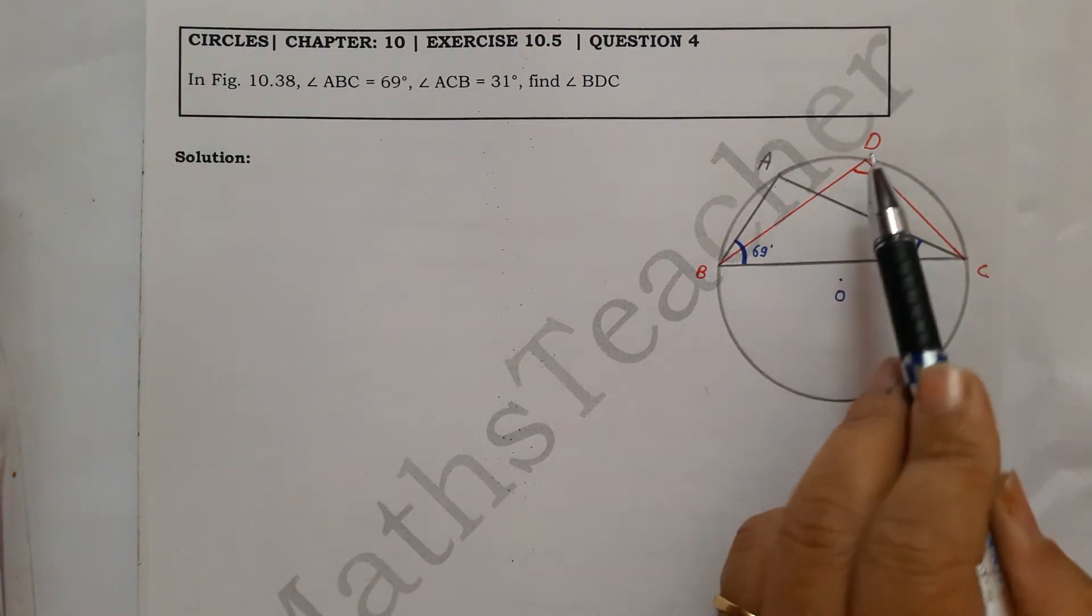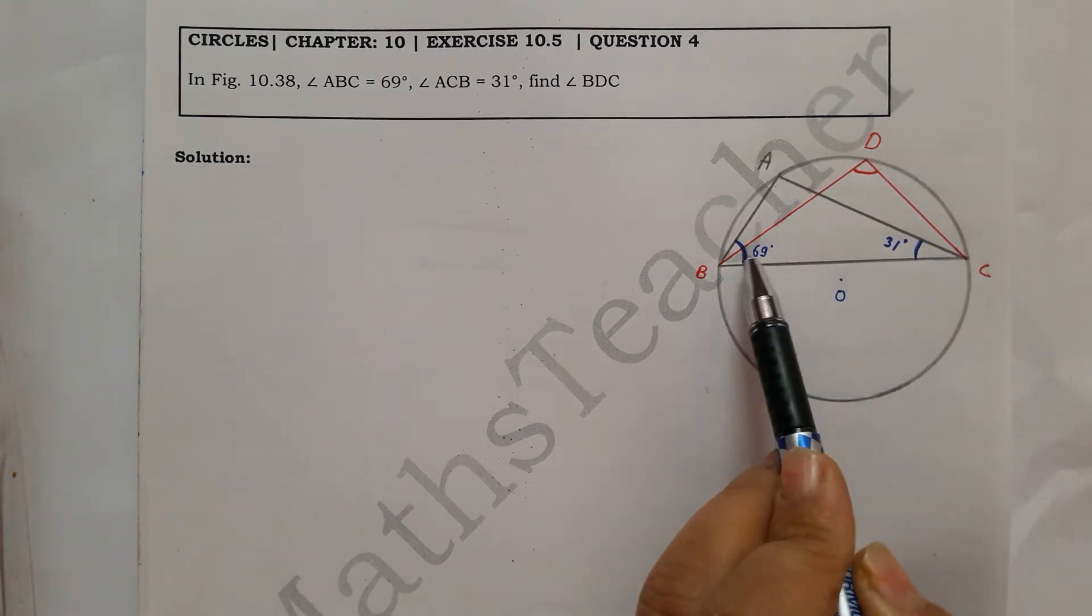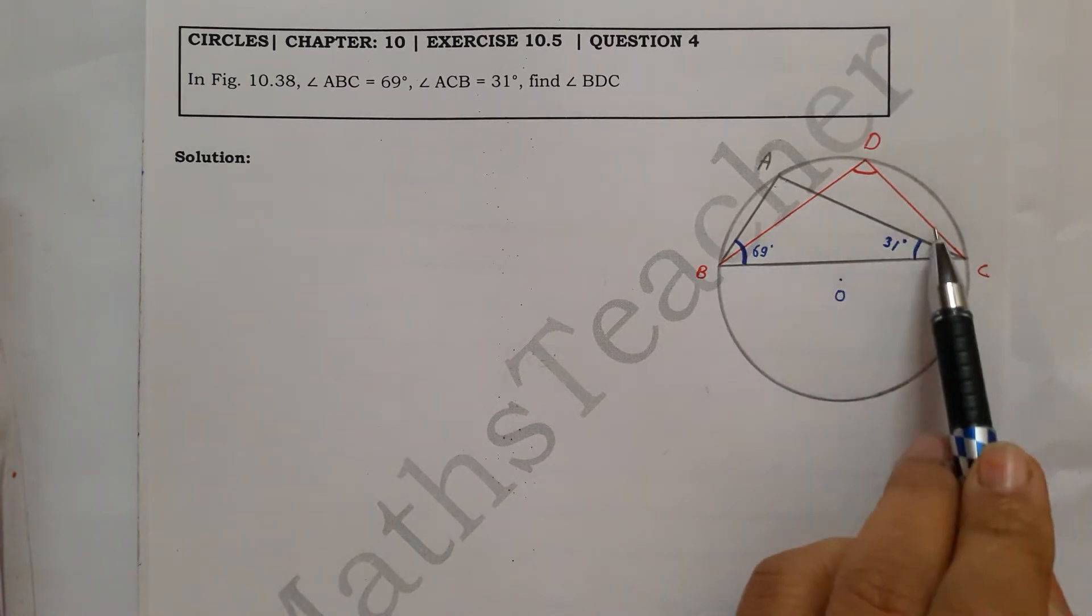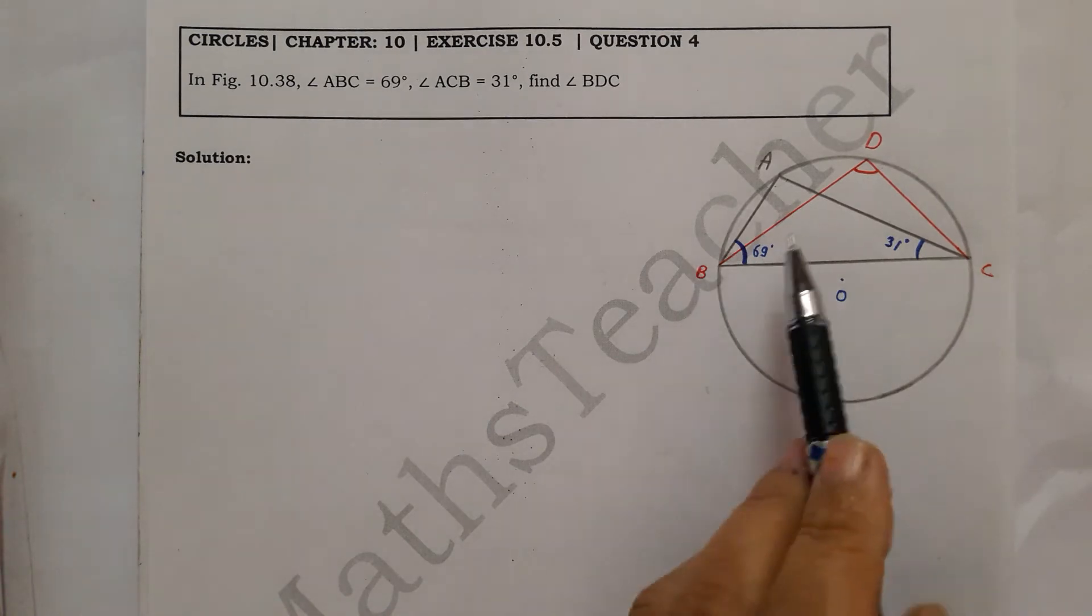If you look here, if I talk about triangle BCD, I don't know this angle and I don't know this angle, so I can't find angle D. Then you see the other triangle ABC.